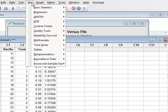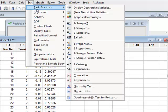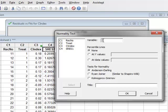First of all, going by STAT, basic statistics, and we will perform a normality test. We will select the residual variable. We will be able to test for normality using Anderson-Darling, Ryan Joyner, or the Kolmogorov-Smirnoff test. But sticking with the default Anderson-Darling, we click OK.